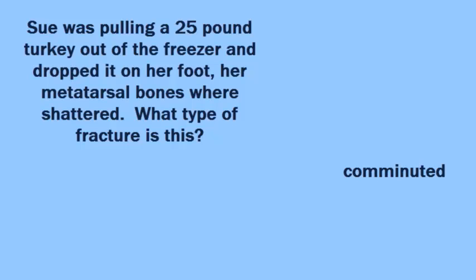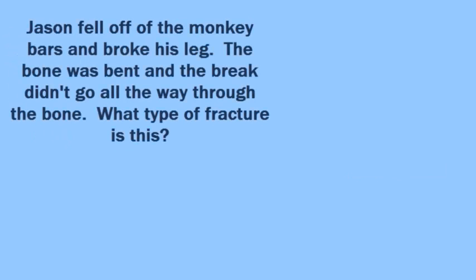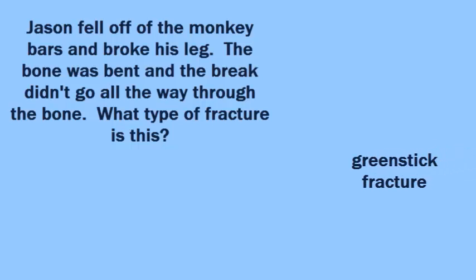The next one: Jason fell off the monkey bars and broke his leg. The bone was bent and the break didn't go all the way through the bone. What type of fracture is this? If you think of a stem of a flower — one that when you break it doesn't go all the way through — you'll come up with greenstick fracture.